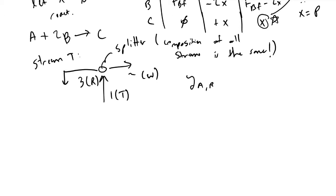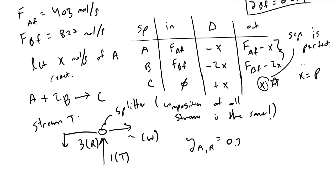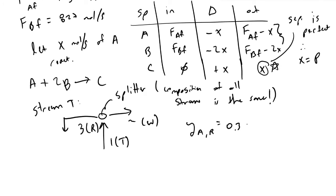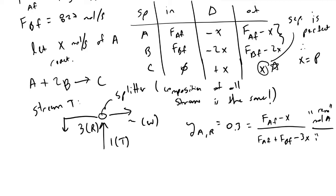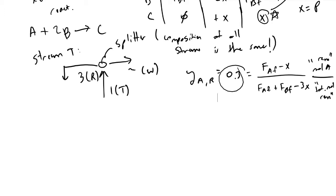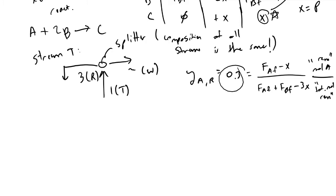We were given that YAR = 0.3 and YBR = 0.7 in the recycle stream. Since all streams from the splitter share the same composition, YAR = 0.3 must equal (FAF − x) divided by (FAF + FBF − 3x). This is moles of A remaining divided by total moles remaining — which intuitively makes sense, and must equal the molar ratio of A that was given to us. We can now solve for x.